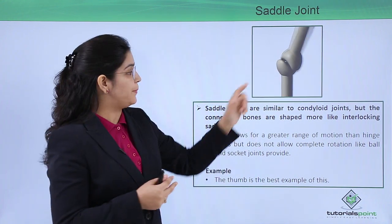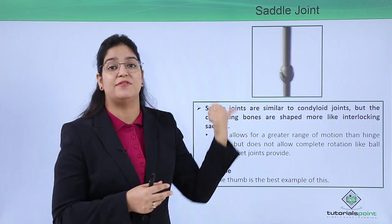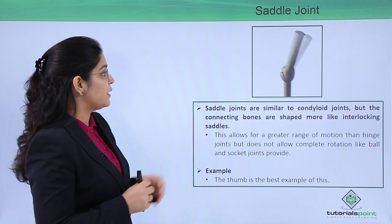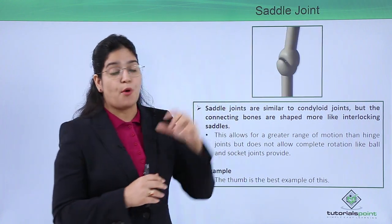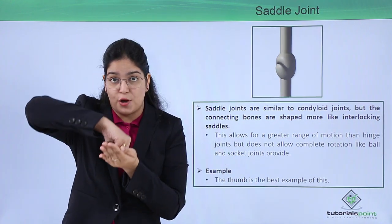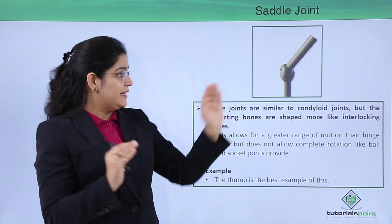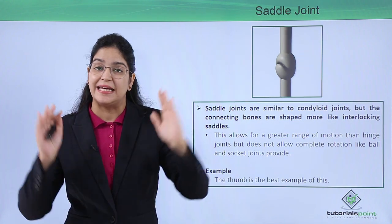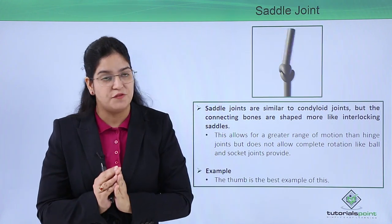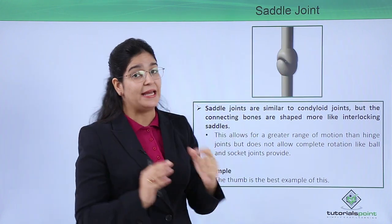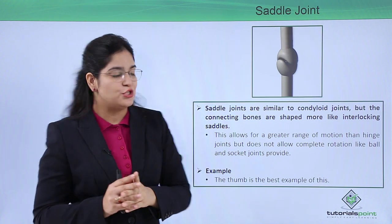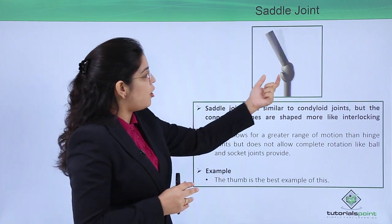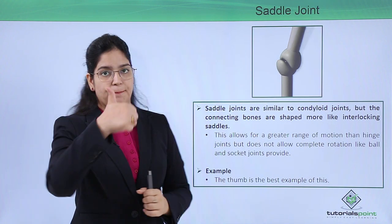Another very important thing about this saddle joint is that it is also like a hinge joint, because one is concave and the other one is convex in shape, and also like a ball and socket joint. But neither it is hinge type, neither it is ball and socket. It is between both of them, and interlocking is very perfect in this type of joint. The example of this saddle joint is the thumb.